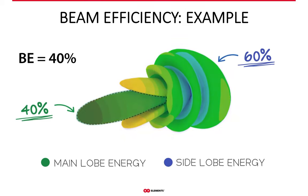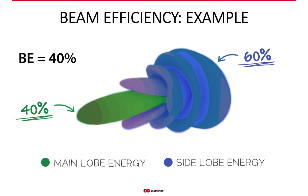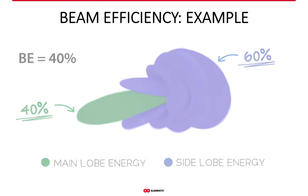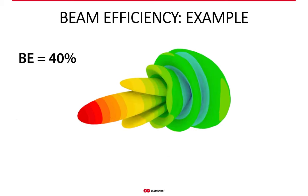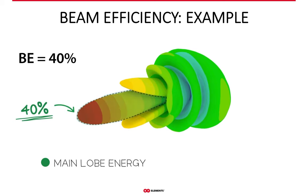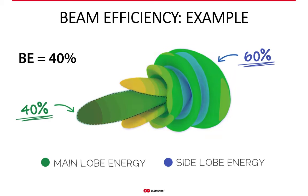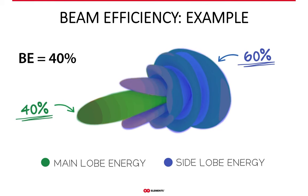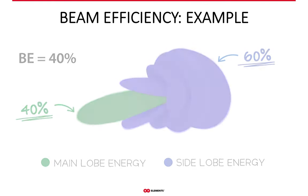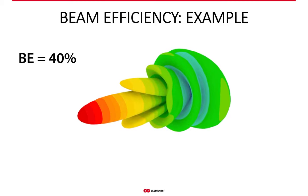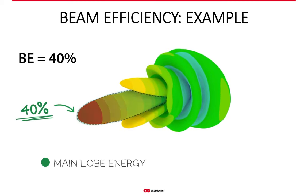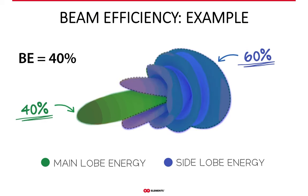Here is a practical example. This is the radiation pattern of a generic parabolic dish. If its beam efficiency is 40%, the remaining 60% of the energy goes everywhere else — in other words, side lobes. Because any radiation outside the main lobe is a side lobe, it must go into the side lobes. Note that all the side lobes are highlighted here. So beam efficiency includes all the side lobes an antenna has.